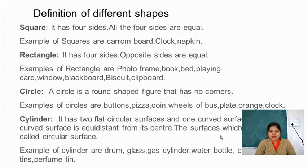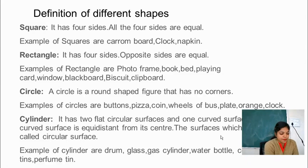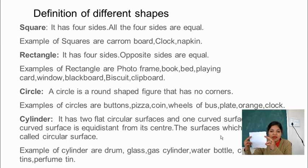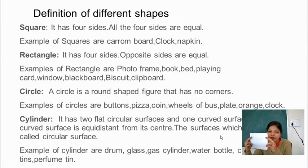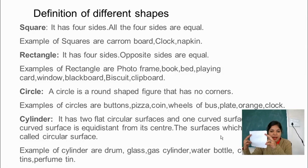There are so many other examples. I will give you one more example. See, this is a napkin, and what is its shape? It is square in shape, because all the sides of this napkin are equal.